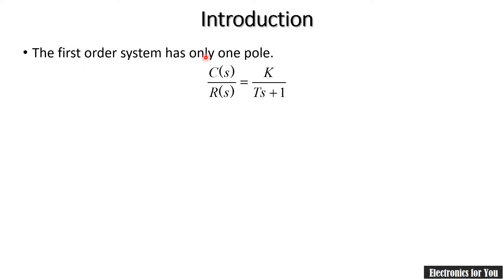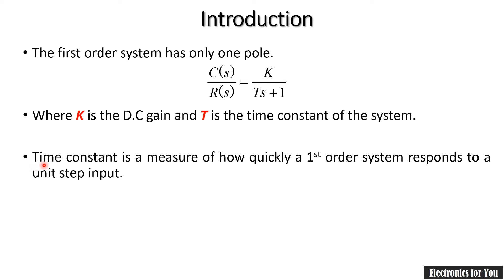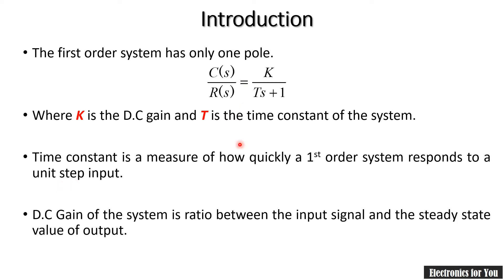Consider a first-order system with transfer function C(s)/R(s) equal to K divided by Ts plus 1. Here K is the DC gain and T is the time constant of the system. The time constant is the measure of how quickly the first-order system responds to a unit step input, and DC gain is the ratio of the steady state output to the input.